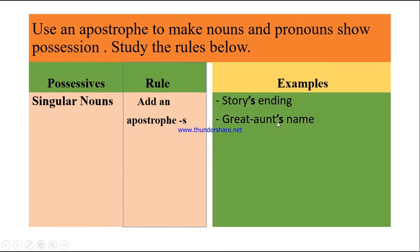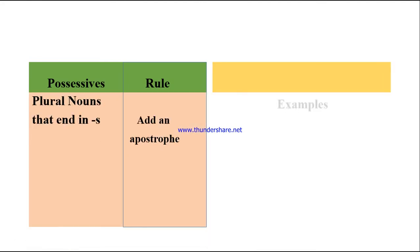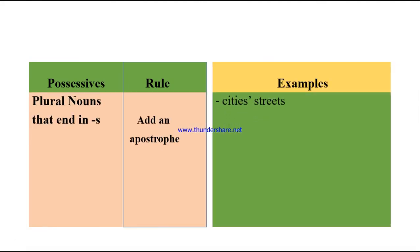If you have a plural noun ending in S — because the regular rule is to add S or ES to make a noun plural — and you want to show possession, you add only an apostrophe. For example: 'city streets' means the streets of the cities; 'the parents' cars' means the cars of the parents.